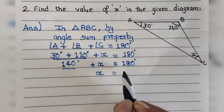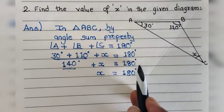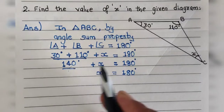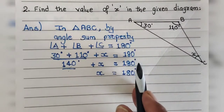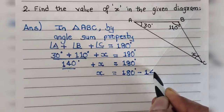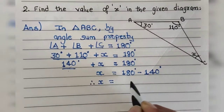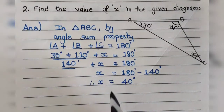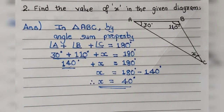Now, 140° + x = 180°. Transposing 140° to the other side changes its sign, so x = 180° − 140°. Therefore x = 40°. This is how we got the value of x using the angle sum property.